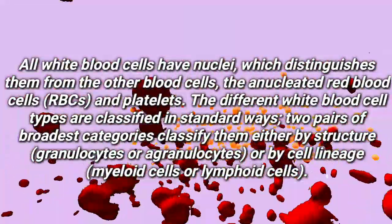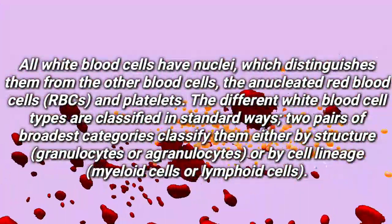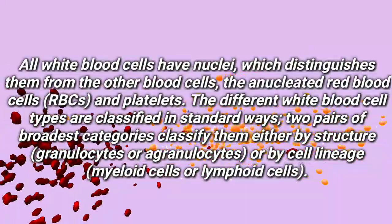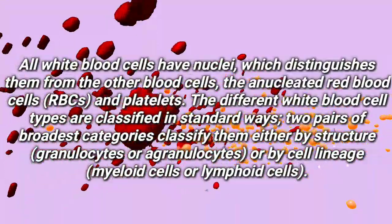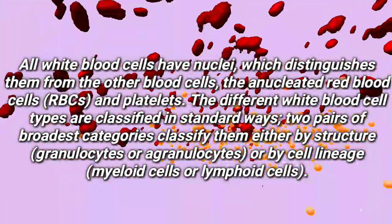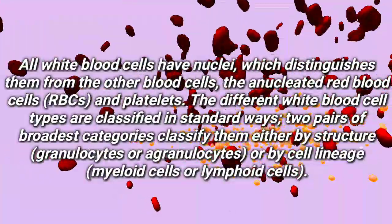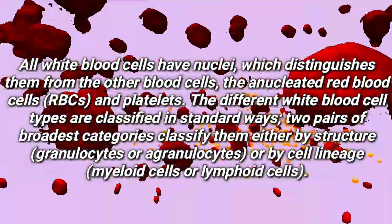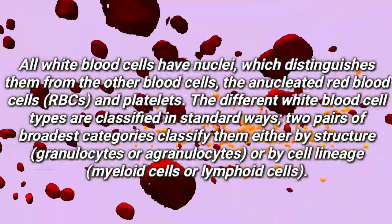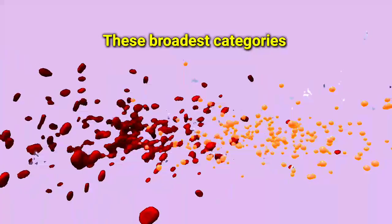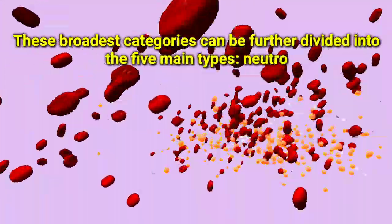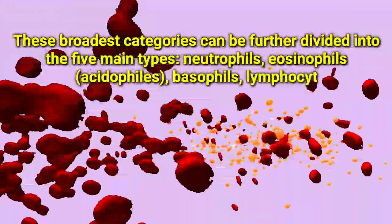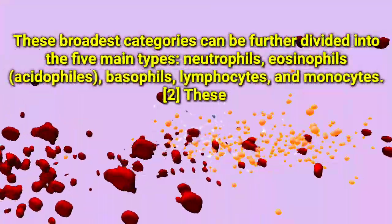The different white blood cell types are classified in standard ways. Two pairs of broad categories classify them either by structure — granulocytes or agranulocytes — or by cell lineage — myeloid cells or lymphoid cells. These broad categories can be further divided into five main types.